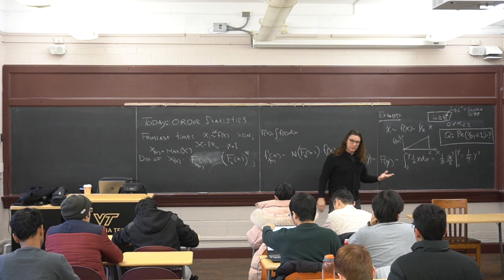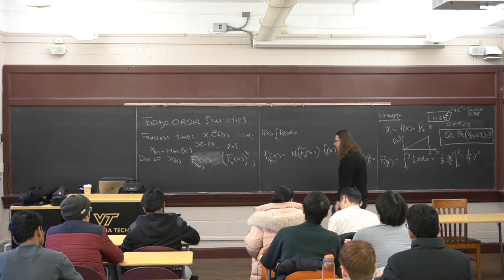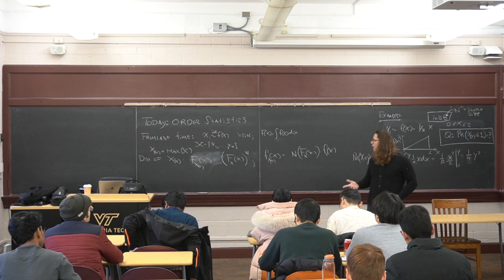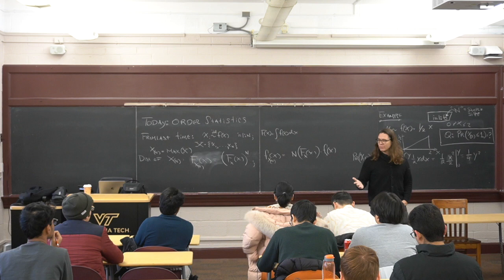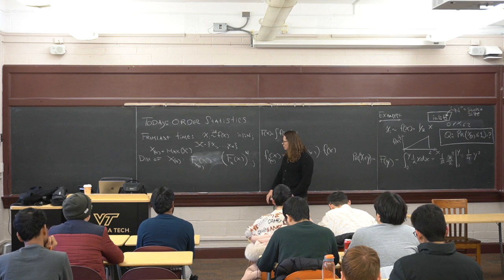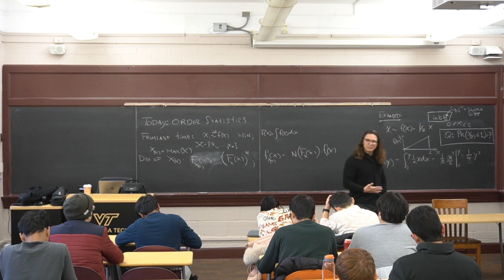We're going to pick up where we were last time, in the middle of this conversation about order statistics. Last time we did the max order statistic — probably the thing everybody can figure out intuitively. Finding its distribution is just taking the original IID distribution and powering it up to n, where n is the number of samples. This says it's the probability that all of the Xi's are less than X, and since everything is IID, it's just this product n times.